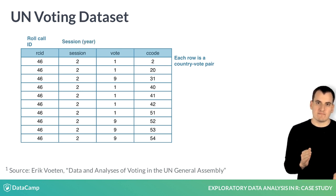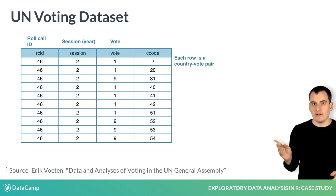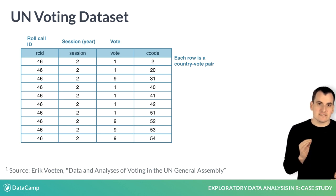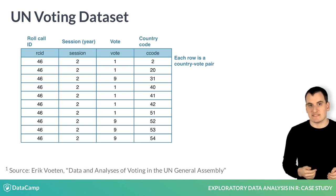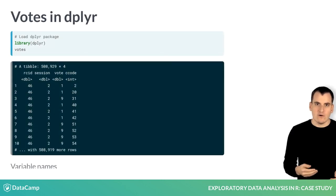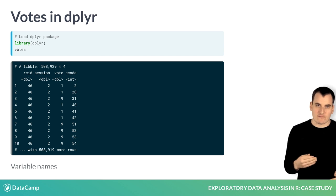The vote column represents that country's choice. For example, one means a yes vote, and nine means a country was not yet a member of the United Nations. The C code column is a country code that uniquely specifies the country. To work with this in R, we'd start by loading the dplyr package, which offers tools for manipulating data.